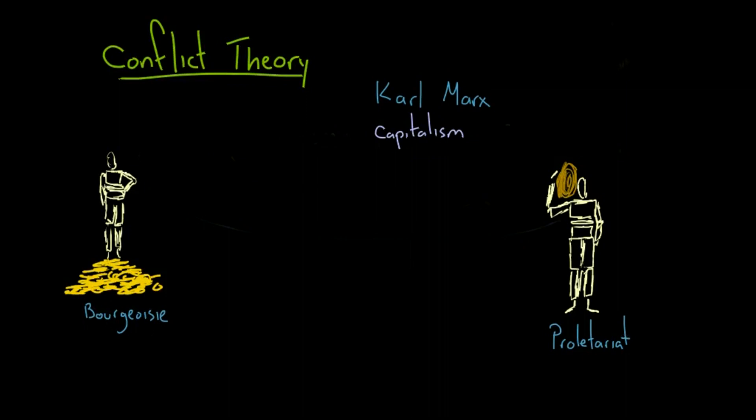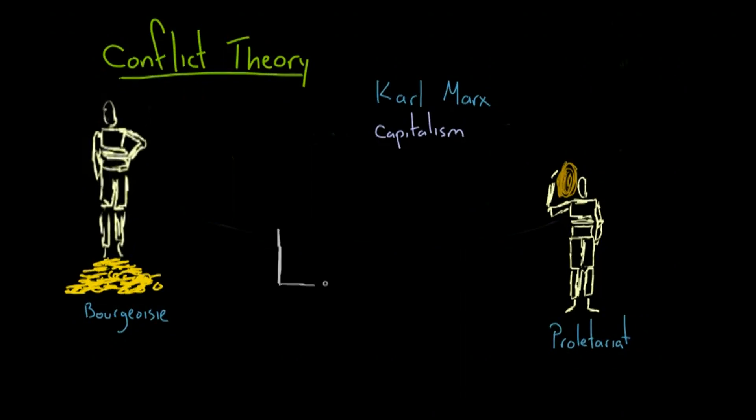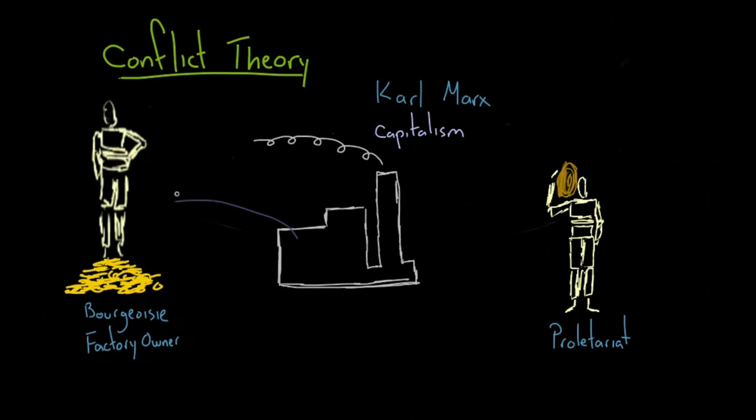You might think that the majority would have more sway over the society, but it was actually the bourgeoisie that had the power. They owned the factories that produced everything people needed, and they sold what they produced to earn a living.